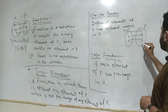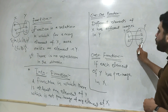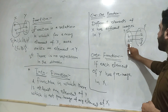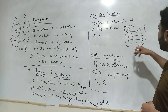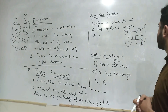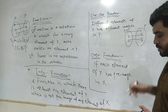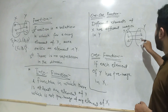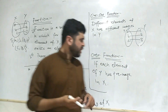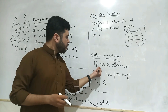There is no condition on the codomain — if I write 4 in Y and 4 has no pre-image in X, it still remains a one-to-one function. Whether I include or remove 4, it does not affect the one-to-one function.